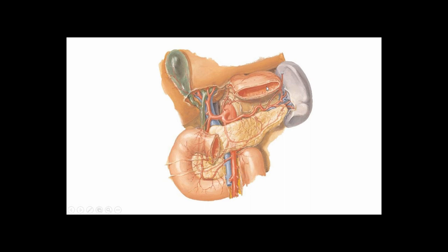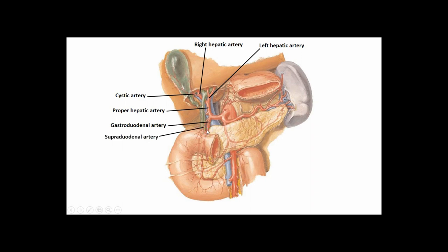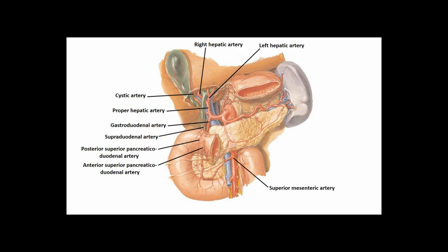Going a bit deeper with the stomach removed, we have a clearer view: the proper hepatic branching into left and right hepatic arteries, the cystic artery off the right hepatic, and the gastroduodenal artery coming down. A small branch off the gastroduodenal is the supraduodenal artery to the superior part of the duodenum. Off the gastroduodenal we have the posterior superior and anterior superior pancreaticoduodenal arteries. The pancreas head and part of the duodenum mark the transition from foregut to midgut, where inferior pancreaticoduodenal arteries come off the superior mesenteric artery.